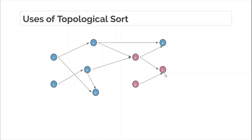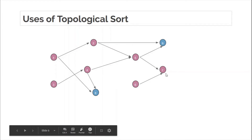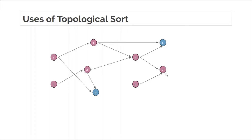Now, five itself has dependencies — five depends upon two and four, so before starting five you must finish two and four. Process two depends upon process one, and four depends on three. So before starting process two, one must be completed; similarly for four, three must be done before. Topological sort gives a valid ordering of processes to be completed. A valid ordering means that for each process, all of its dependencies must appear before it. So for seven, all dependencies — one, three, two, four, five, and six — must appear before seven in the topological ordering.